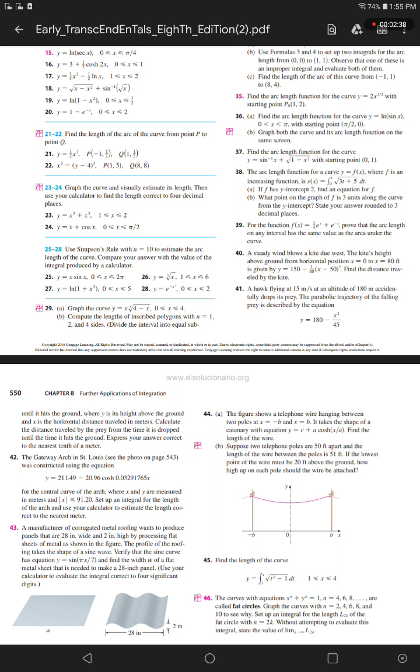Next. A hawk flying at 15 meters per second at an altitude of 180 meters accidentally drops its prey. The parabolic trajectory of the falling prey is described by the equation y equals 180 minus x squared over 45 until it hits the ground.